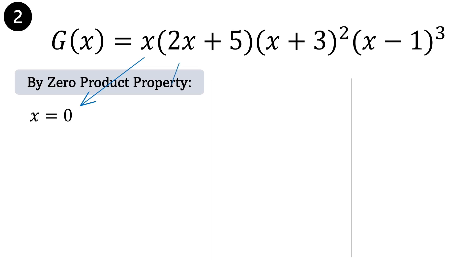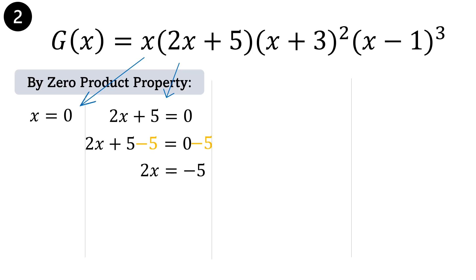Next: 2x plus 5 equals 0. Applying the additive inverse: 2x plus 5 minus 5 equals 0 minus 5. Then simplify: 2x equals negative 5. To isolate x on one side of the equation, divide both sides by 2. Then x is equal to negative 5 halves.